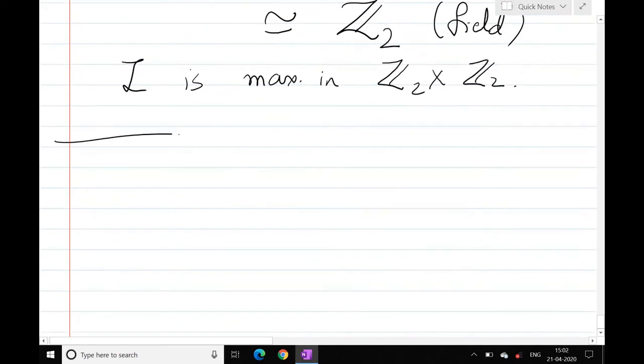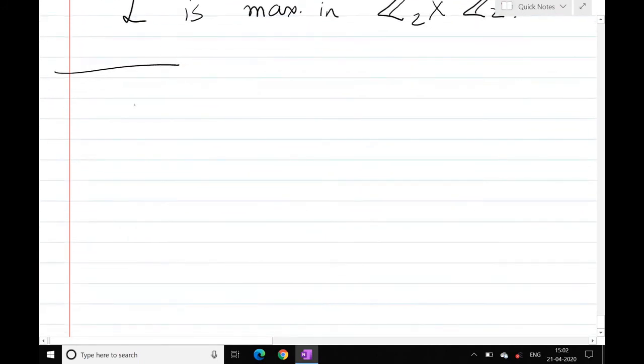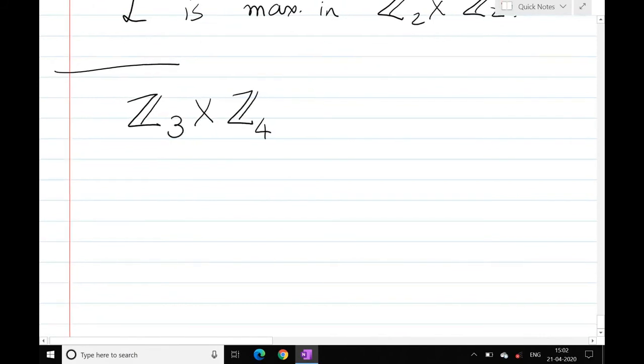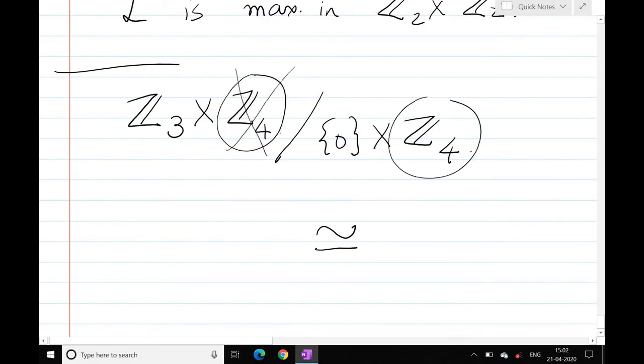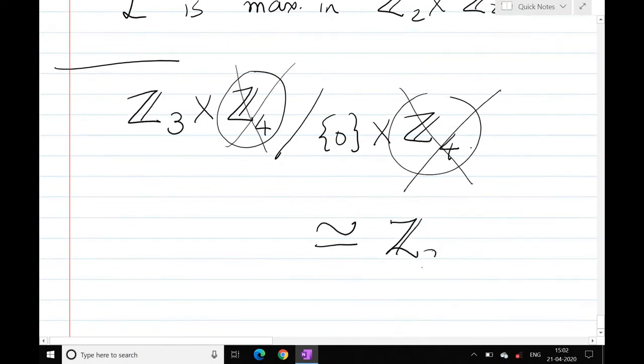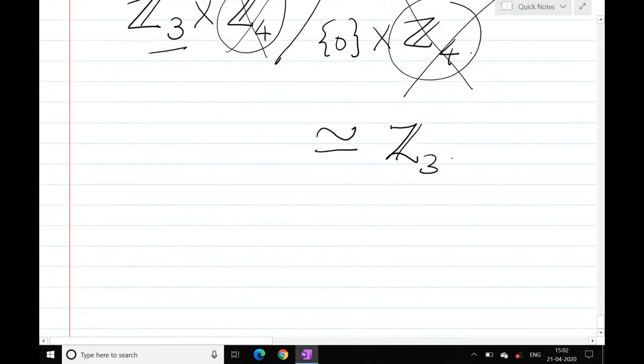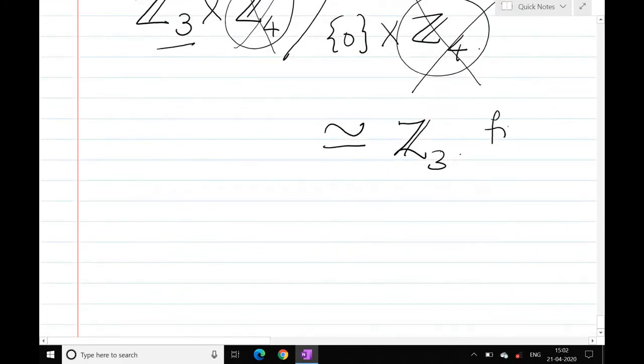Now this is clear to you, if I take Z3 cross Z4, if I take quotient with {0} cross Z4, this will be isomorphic to, basically we are showing that this is isomorphic to Z3 and then that is a field. We can show this, that this is isomorphic to Z3.